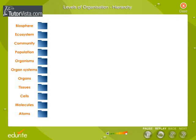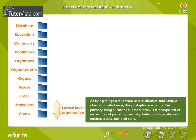Closely observe this flowchart to understand the hierarchy of the organization in the living world. At the lowest level are the atoms followed by molecules. All living things are formed of a distinctive and unique chemical substance, the protoplasm, which is the primary living substance.